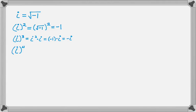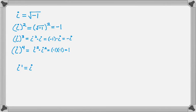If I do i to the fourth, I can make that i squared times i squared. I know that i squared is negative 1, so negative 1 times negative 1 is positive 1. So what you're going to do right now is memorize those four things: i to the first is the square root of negative 1 — or really just i is a better way to think of it — i squared is negative 1, i cubed is negative i, and i to the fourth is positive 1.